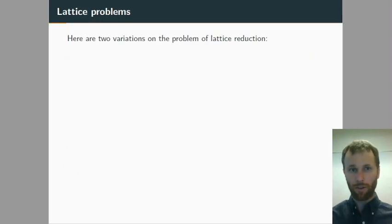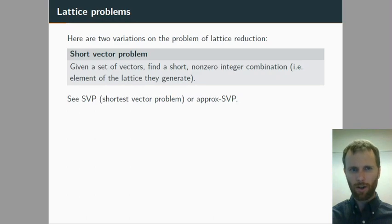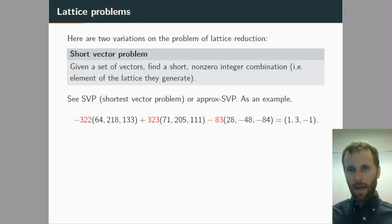Here are some informal definitions for these problems. A short vector problem: you start with a set of vectors and you're asked to find a short non-zero integer combination. In other words, you'd like a short element of the lattice generated by the original input vectors. This is commonly called SVP or approx-SVP if you don't insist that your output vector is an actual shortest vector of the lattice. As an example here, there are three three-dimensional vectors, and we'd like to know what integers we could put in place of the red question marks to make the output short in whatever your norm of choice is. In at least the L2 norm, the shortest vector is (1, 3, -1), and those are the integers that you would need to get it.